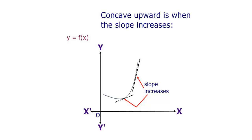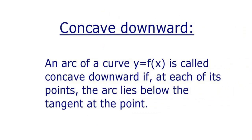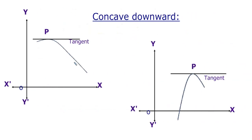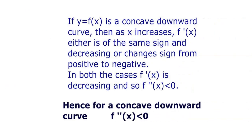Now let us understand what concave downward means. An arc of a curve y = f(x) is called concave downward if at each of its points the arc lies below the tangent at the point. We can see in the figure that the arc of the curve lies completely below the tangent at point P. Such a curve is said to be concave downward.